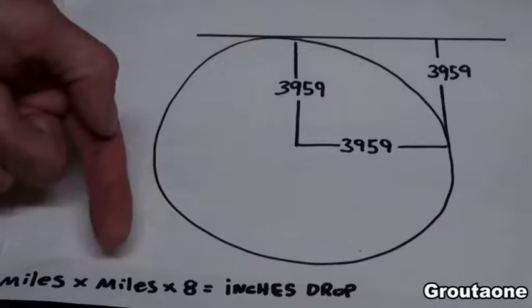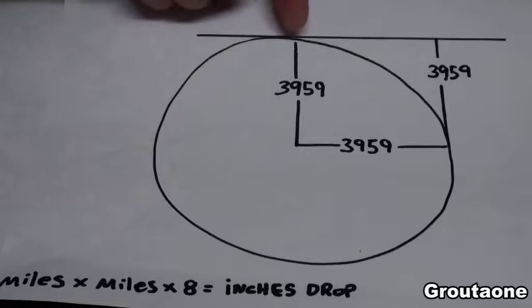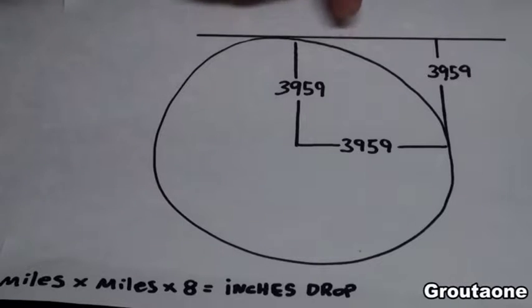Then this formula with zero observer eye height would produce 8 inches of drop in the first mile, second mile would be 32 inches, third mile would be 72 inches, and it becomes progressively more.